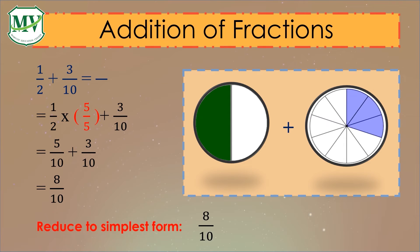Is 8 over 10 divisible by any number? That's right! 8 and 10 are divisible by 2. Let's divide 8 by 2. 8 divided by 2 equals 4, and 10 divided by 2 equals 5. So, 1 over 2 plus 3 over 10 equals 4 over 5.